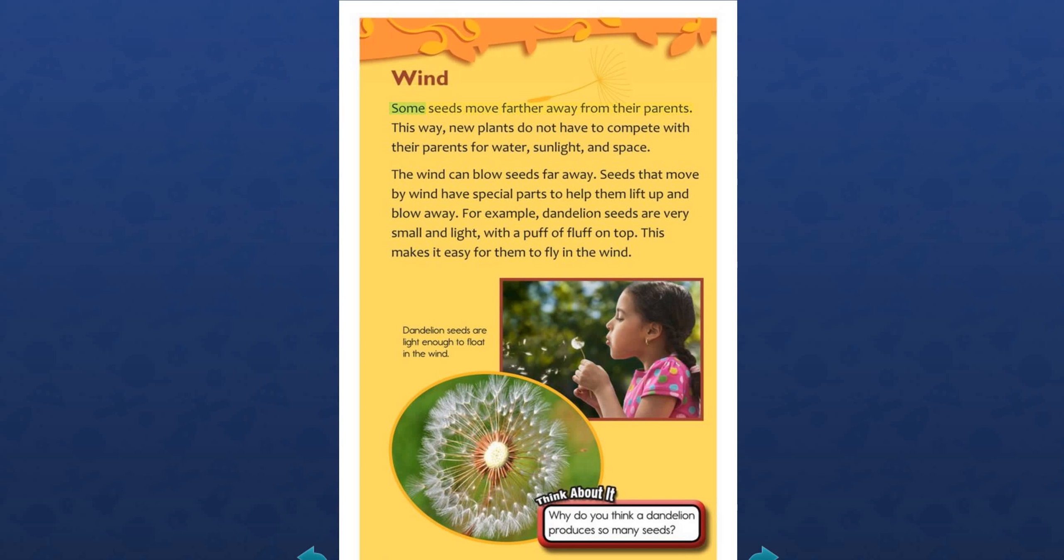Wind: Some seeds move farther away from their parents. This way, new plants do not have to compete with their parents for water, sunlight, and space. The wind can blow seeds far away. Seeds that move by wind have special parts to help them lift up and blow away. For example, dandelion seeds are very small and light with a puff of fluff on top. This makes it easy for them to fly in the wind. Think about it: Why do you think a dandelion produces so many seeds?